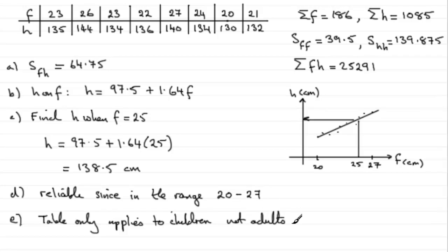Because, obviously, adults have grown, but children are still growing. So their height is going to change much quicker than their foot length is going to change.